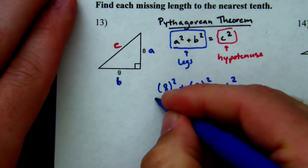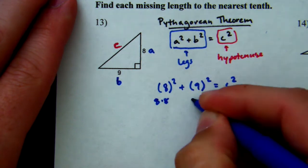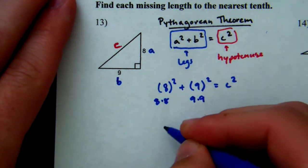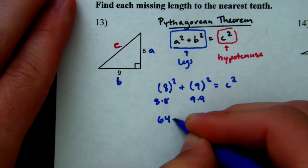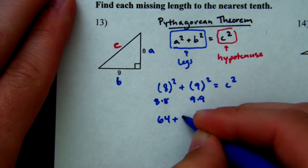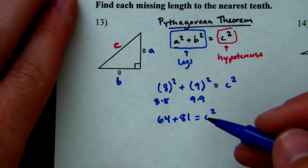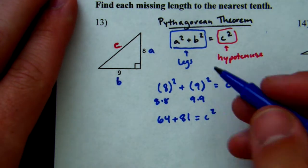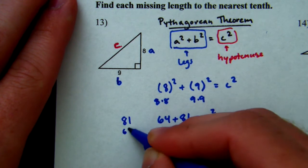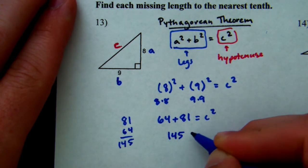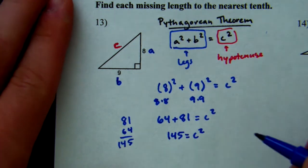So 8 squared, which is 8 times 8, and 9 squared, which is 9 times 9. 8 squared is 64, plus 9 squared, which is 81. And that equals c squared. So we add 64 and 81. Let's do it the old school way. 64, that's 5. 8 plus 6, 14. 145 equals c squared.